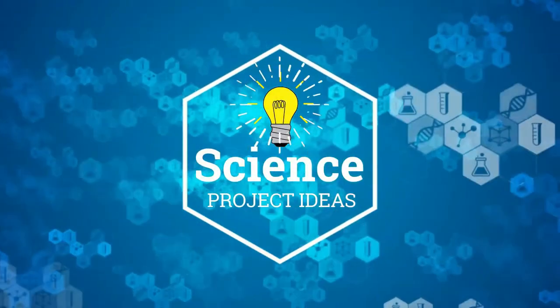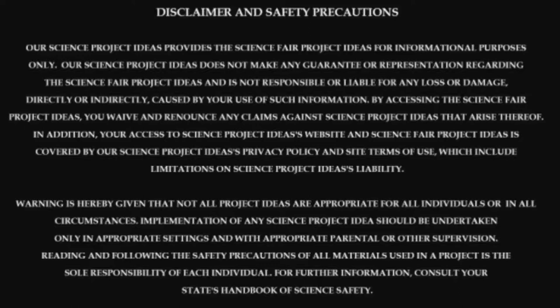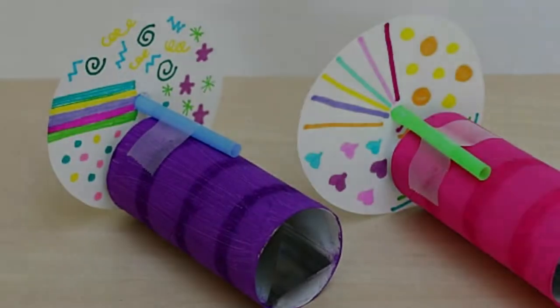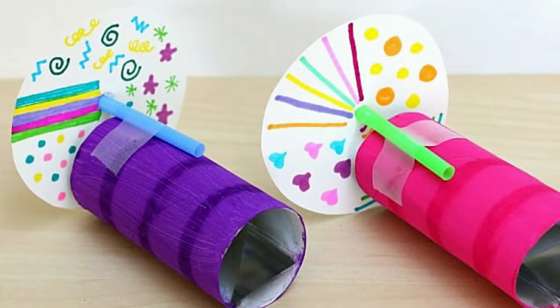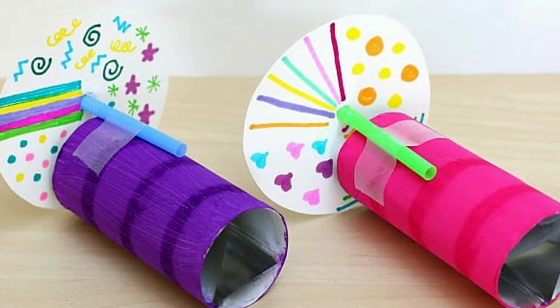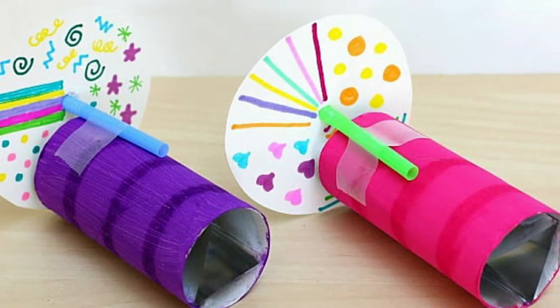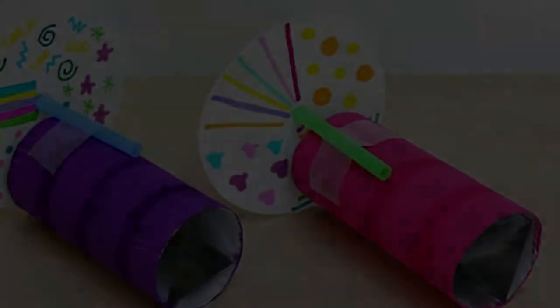Welcome to our science project ideas. How to make a kaleidoscope. Learn how to make a kaleidoscope in this fun STEM science activity and craft for kids. It's such a fun way to explore light, reflections, and symmetry. Follow our science project ideas.